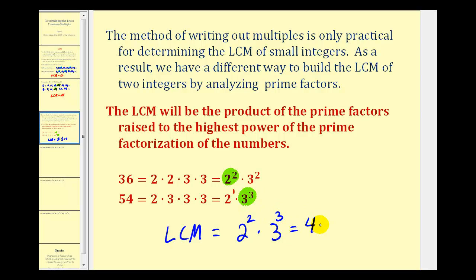Two to the second is equal to four, and three to the third is equal to twenty-seven, so the least common multiple of thirty-six and fifty-four is equal to one hundred eight. It's also true that two to the first times three to the second would be the greatest common divisor of thirty-six and fifty-four, which would be eighteen. But in this video, we'll focus on LCM.